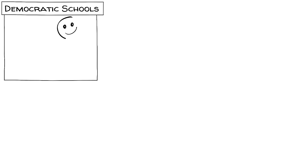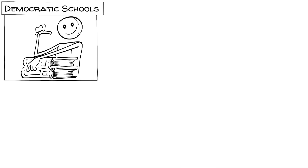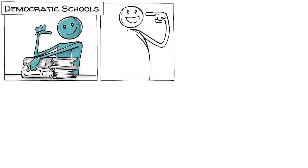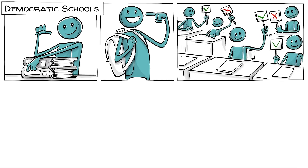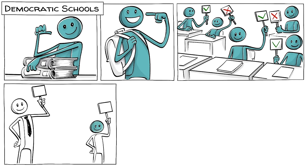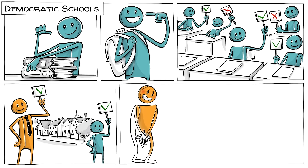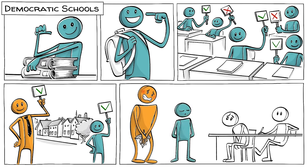Democratic schools allow students to have complete control over their education. Class attendance is voluntary and rules are made by popular vote. Students and faculty usually each have one vote. In one famous British democratic school, they even voted once to allow everyone to attend class completely nude.